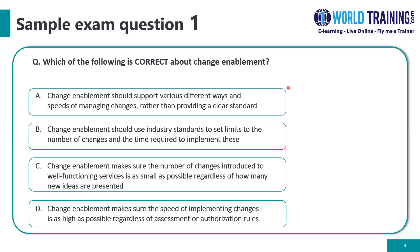We begin with question number one: which of the following is correct about change enablement? There will be four options given. There may be some questions where you have to pick two of the four options, but you ultimately select one of the four options as the correct answer. Option A: change enablement should support various different ways and speeds of managing changes, rather than providing a clear standard.